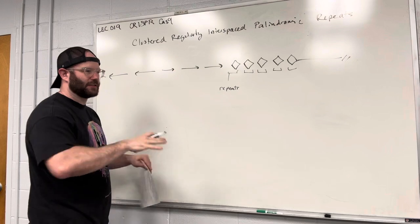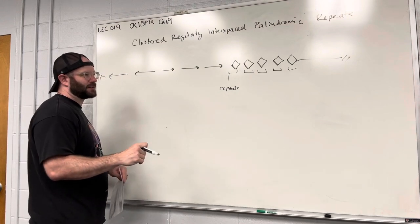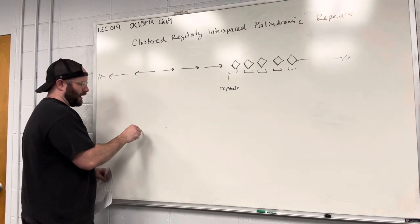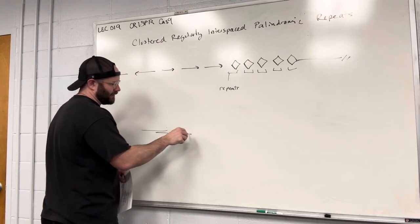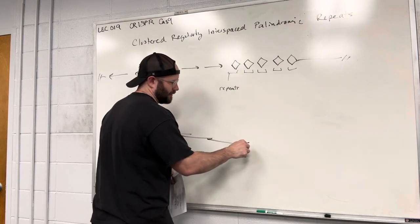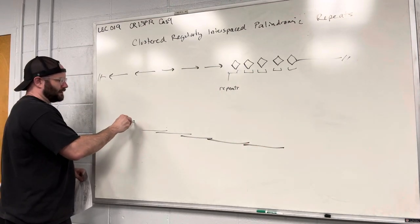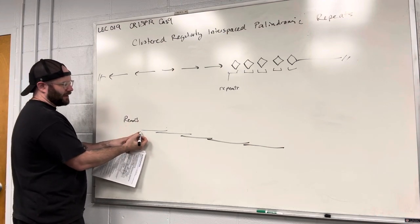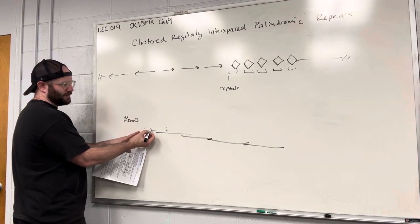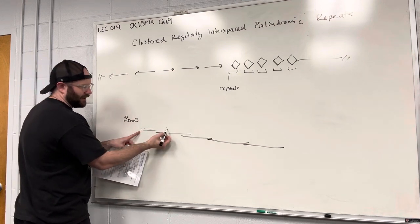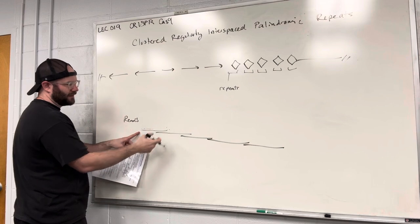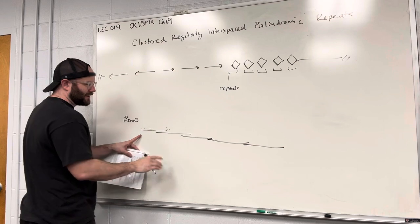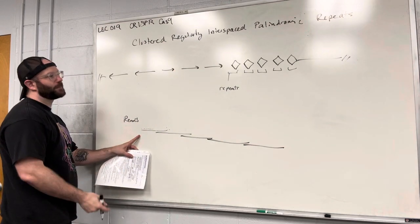One way you would find these is if you're looking through genomes, you might do a sequencing reaction and get what are called reads. A read is a piece of data — a string of DNA sequence. Genomes are assembled by finding overlapping regions in these reads and stitching them together to form genome assemblies.